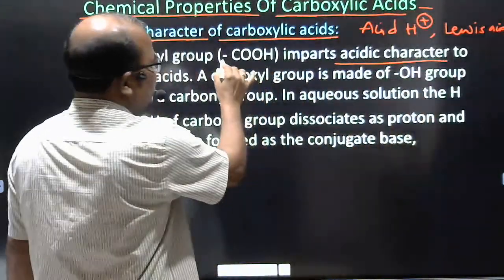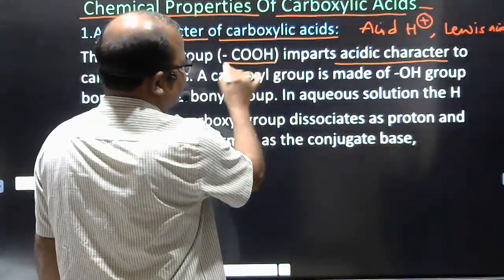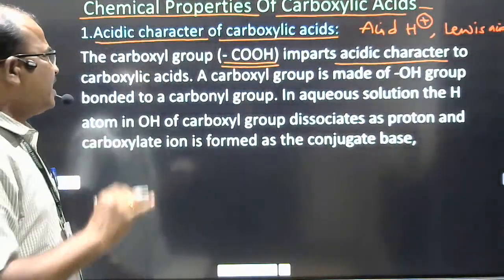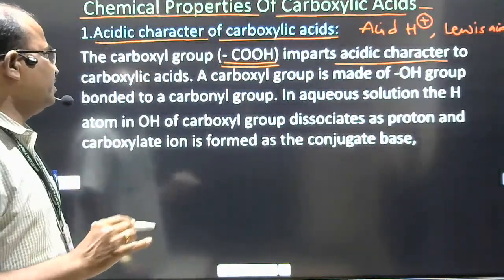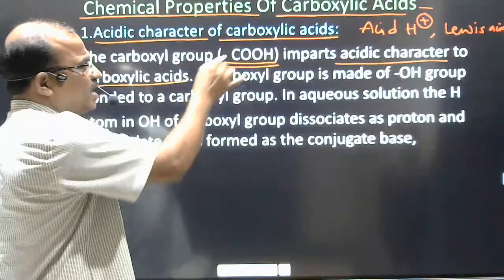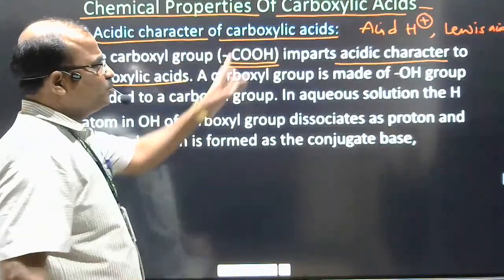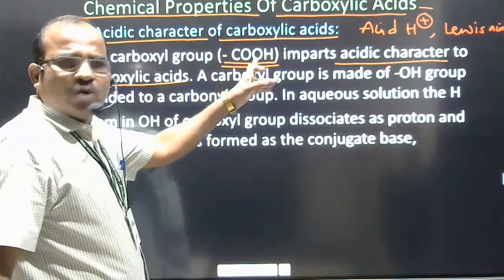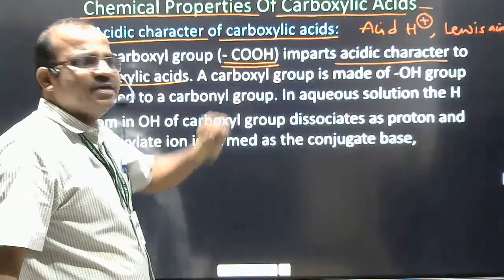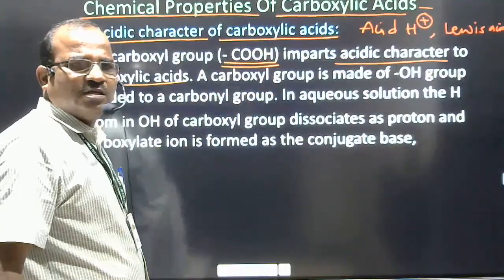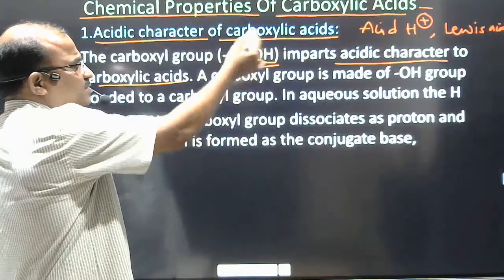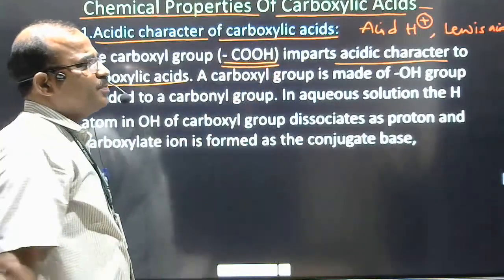The COOH group has an acidic character — it is a carboxylic acid. If you have a carboxylic acid group, it will be ionized, giving COO minus and H plus ions. These ions are produced to show the compound releasing H plus.